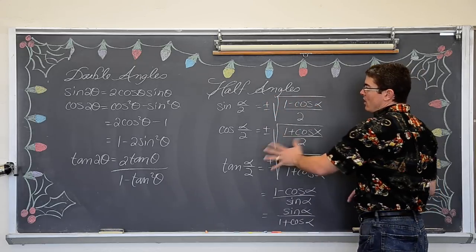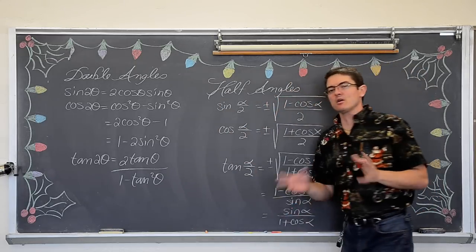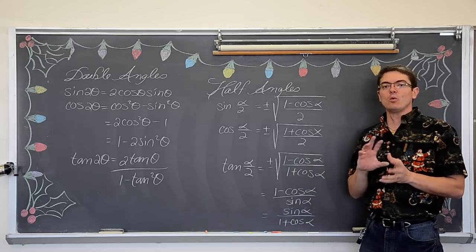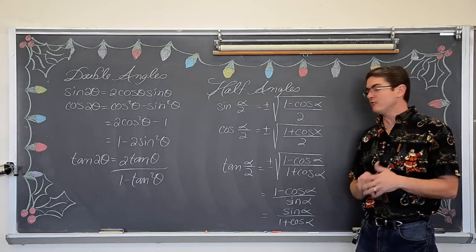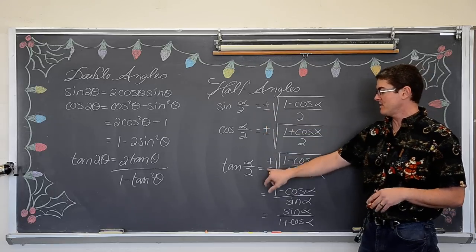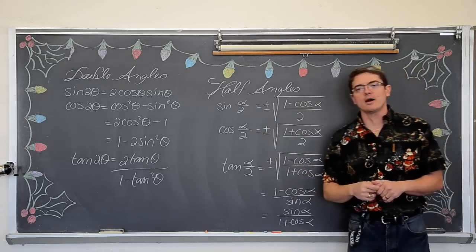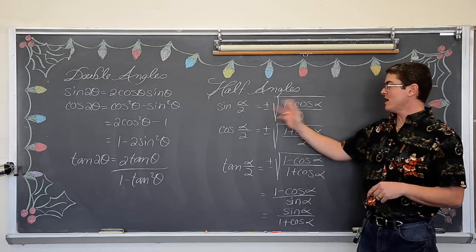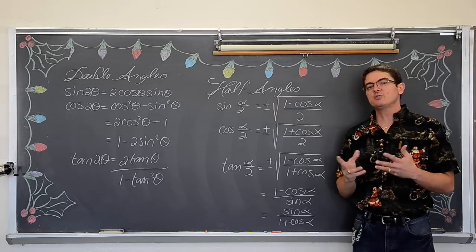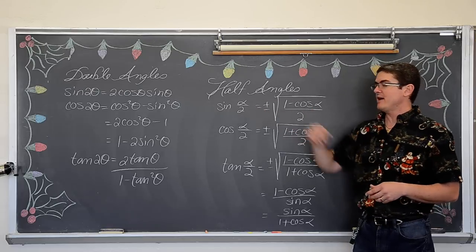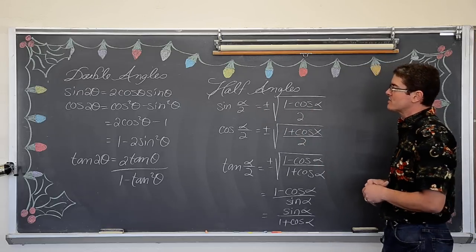Whether it is a double angle or half angle, you are going to have some issues. You need to think about what quadrant the answer is actually in — that is why there are plus and minuses in some of these equations. These plus or minuses are not just there because of the square root symbol; you have to decide where that half angle is in reference to the given information. We will touch on that as we do some examples.